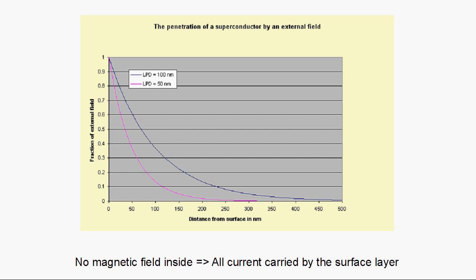Straight away, we know there can be no current inside the material, because that would generate an internal magnetic field. Therefore, all current is carried in the surface layer. In this condition, the superconductor is said to be in the Meissner state.